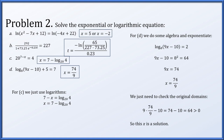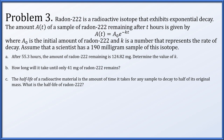Problem three: Radon-222 is a radioactive isotope exhibiting exponential decay. The amount A(t) remaining after t hours is A(t) equals A₀ times e to the negative kt, where A₀ is the initial amount and k is the decay rate constant. A scientist begins with a 190-milligram sample. In part a, after 55.3 hours the remaining amount is 124.82 milligrams; we need to find k.